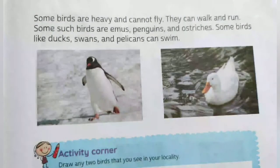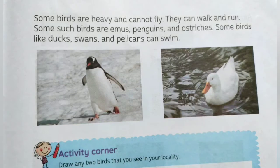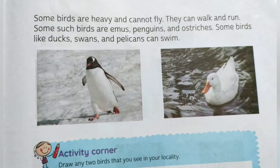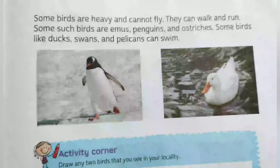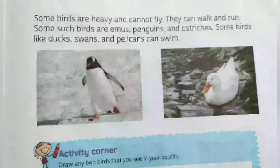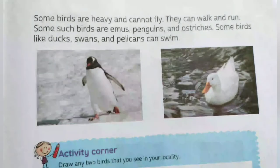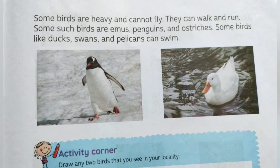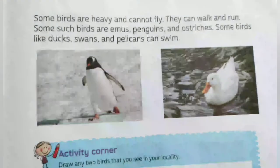Some birds are heavy and cannot fly. Kuch birds bhoat heavy hoti hai joh ki fly nahi kar pate. They can walk and run. Some such birds are emus, penguins and ostrich. And some birds like ducks, swans and pelicans can swim. Ye sab duck, swan and pelican swim karte hai.